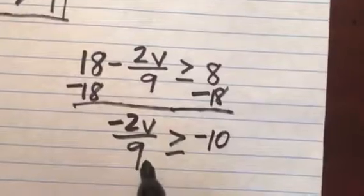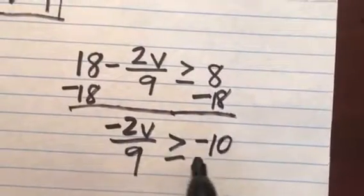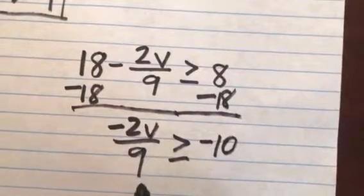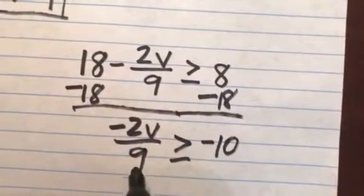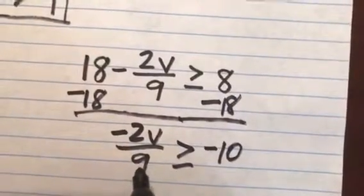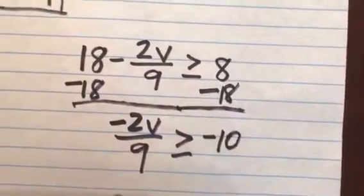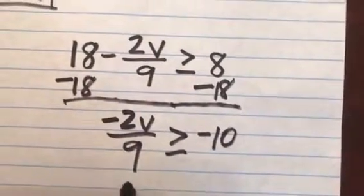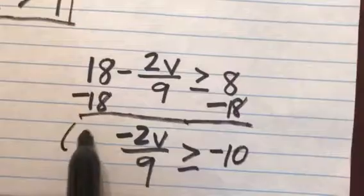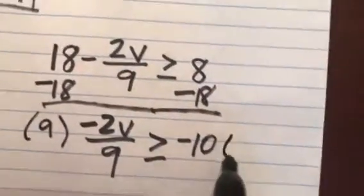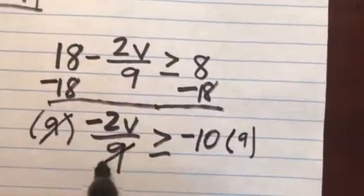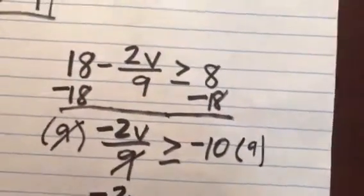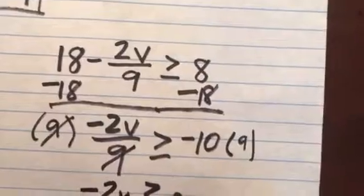Now we can do this in two steps if you like. You can either regard this as negative 2v divided by 9, or you can regard it as negative 2 ninths v. So let's say that I want to get rid of the 9 first. I can do that. Multiply both sides by 9. Then the 9's cancel out over here, and I'm left with negative 2v is greater than or equal to negative 90.